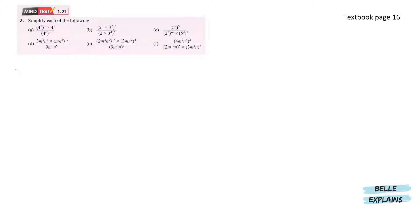Simplify each of the following. We have part a. Since we have a bracket here, the indexes will multiply each other, which means we get 4 to the power of 6 times 4 to the power of 5 over 4 to the power of 12.